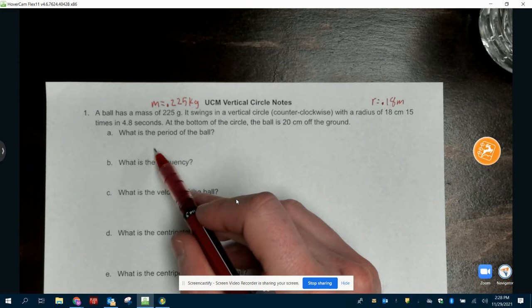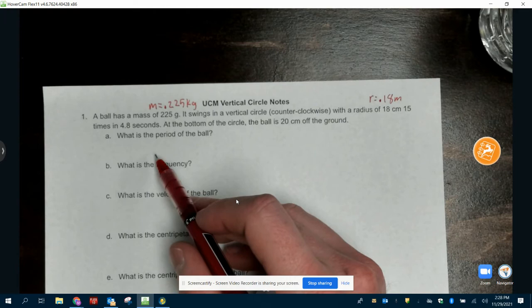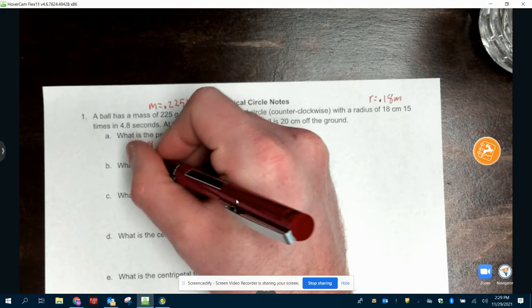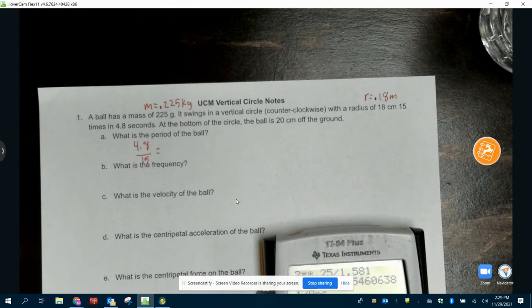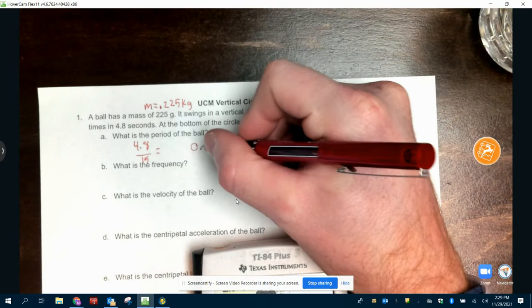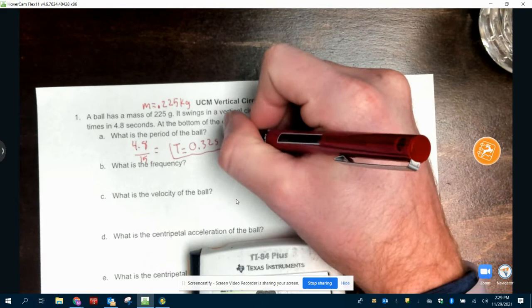Part A, what is the period of the ball? Period is time or total time over how many turns. So we're going to do 4.8 seconds, and we're going to divide that by 15 here. So 4.8 divided by 15 gives you 0.32 seconds. That is our time period, which we're going to use on some of the other problems.